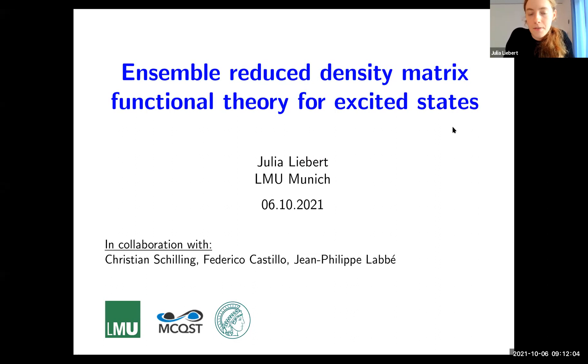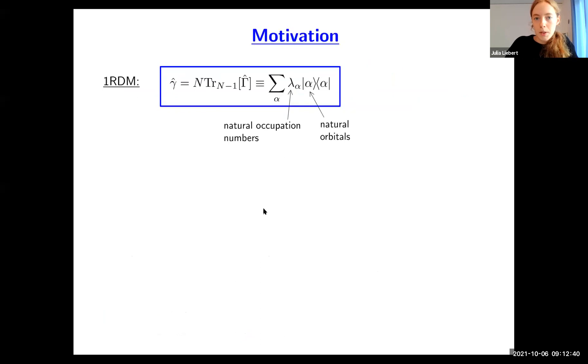In the previous talk, we learned a lot about different notions of ground state RDMFT and how to approximate universal functionals. Now in this talk, I want to move onwards and present to you a new ensemble reduced density matrix functional theory which allows us to extract excited state energies. This is work done in collaboration with my supervisor at the LMU in Munich and also with colleagues who supported us on the mathematical side.